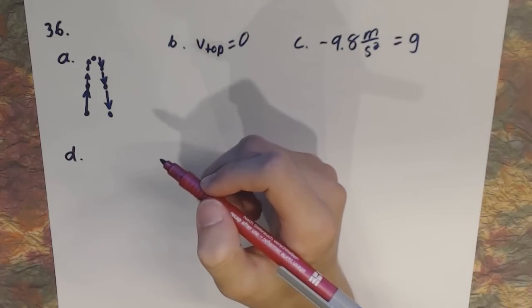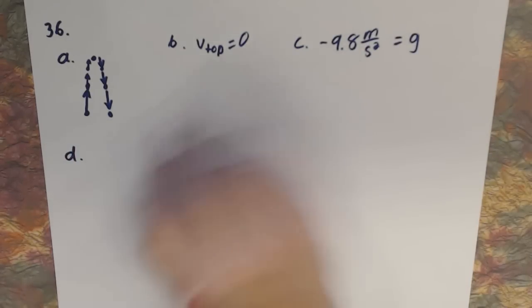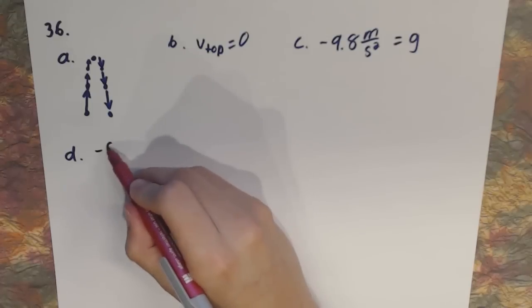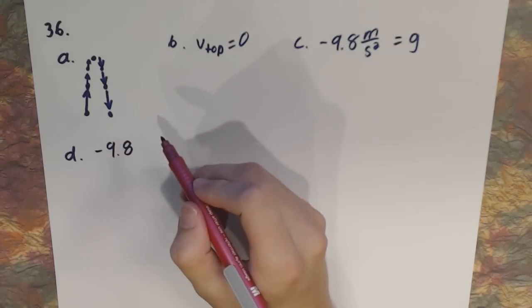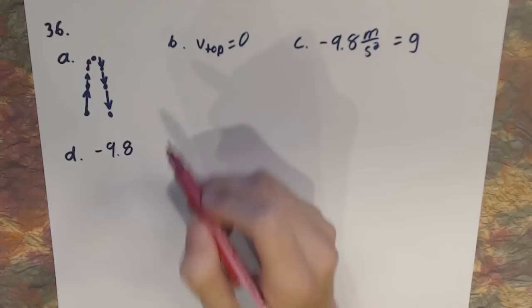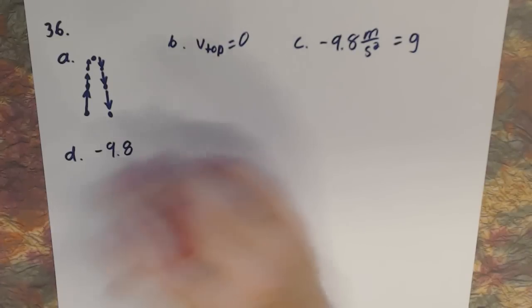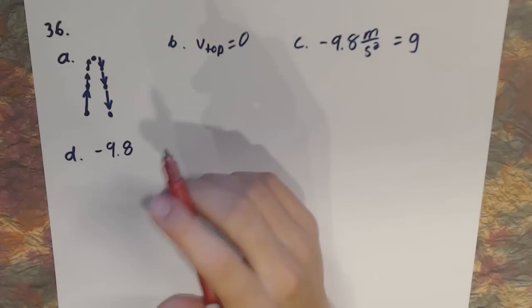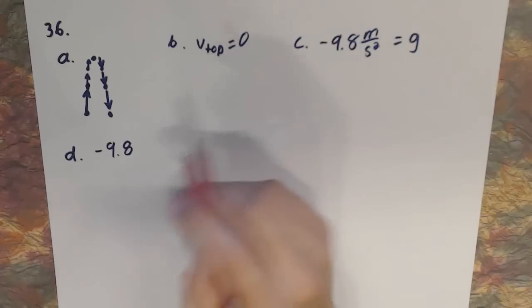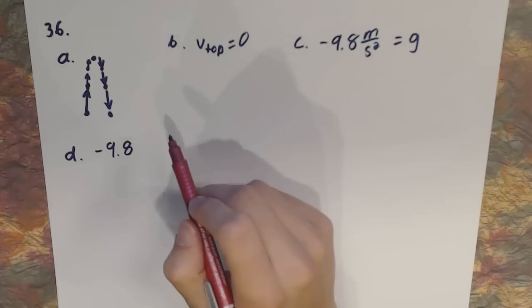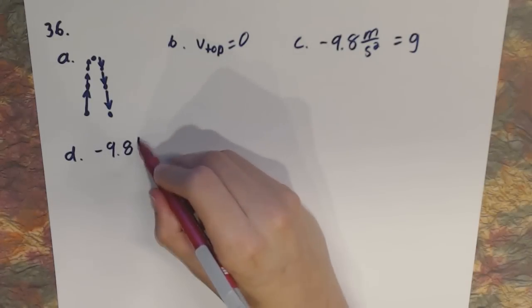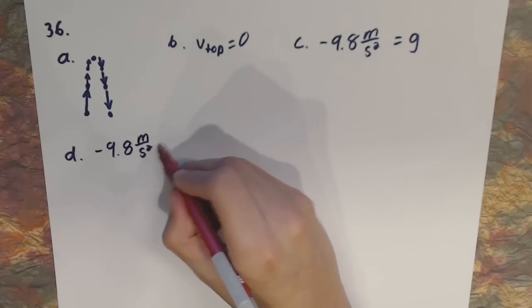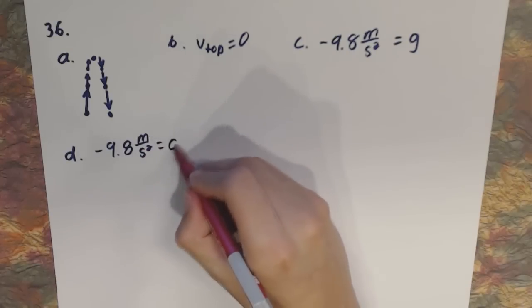Part D asks: what is the acceleration just before it hits the ground? It's the same as Part C — just the acceleration due to gravity — because during free-fall motion it is constantly accelerated motion, so the acceleration is always the same value, which in this case is going to be gravity.